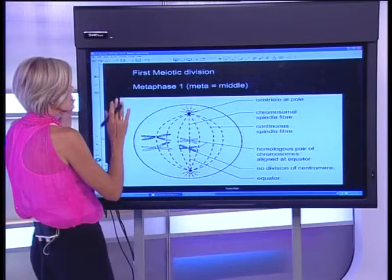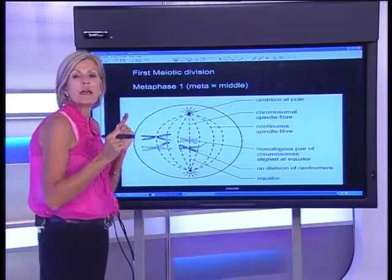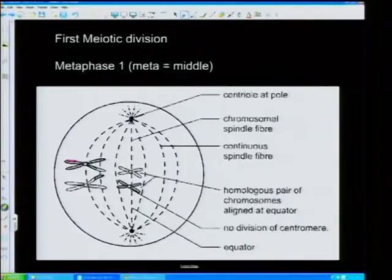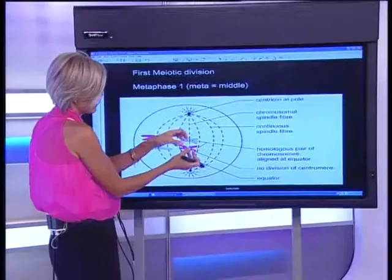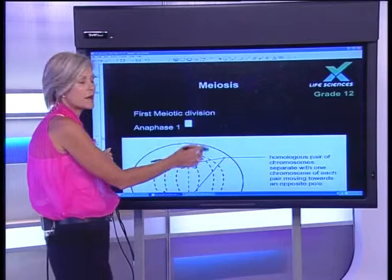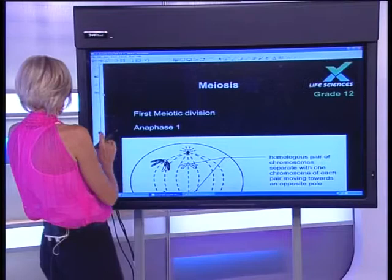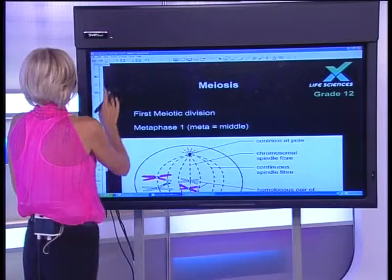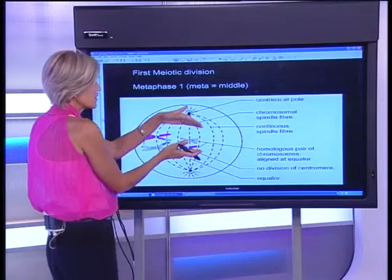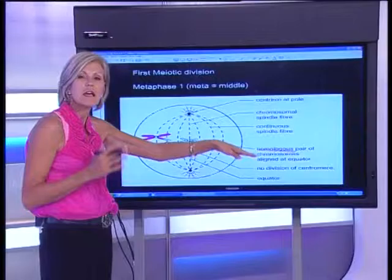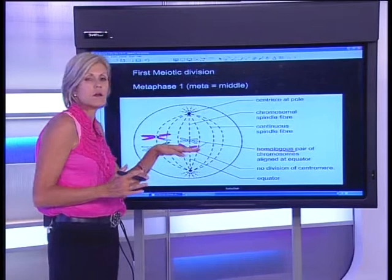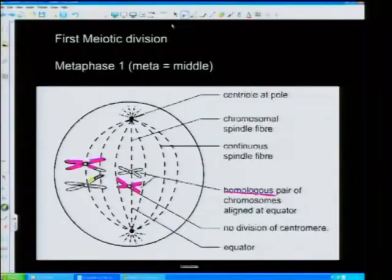In metaphase of meiosis one, your chromosomes are lined up in the middle and they line up independently. The maternal chromosome — the one this organism had from its mother — pairs with the homologous chromosome from the father. These homologous chromosomes are for the same characteristics; the genes for the same characteristics are situated on them. So that's from mom, and dad's ones pair alongside them.